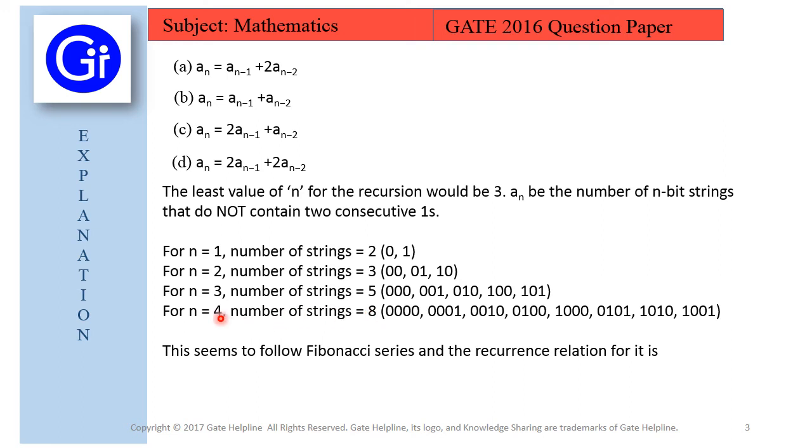So 8 we can get from a_3 + a_2, that is 5 + 3 = 8. If we try to map this with all four options, option B would match it because this one is simply a_n = a_{n-1} + a_{n-2}. The other options multiply by 2, which will not satisfy.